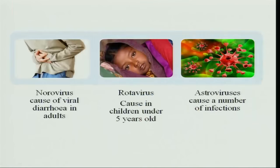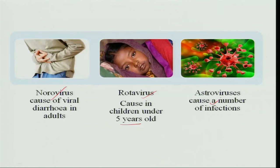Infectious diarrhea is generally caused by viruses, bacteria, or sometimes parasites. There is norovirus, which causes viral diarrhea. Rotavirus generally causes diarrhea in children below 5 years of age. There is also astrovirus, which is caused by a number of viruses and other infections.